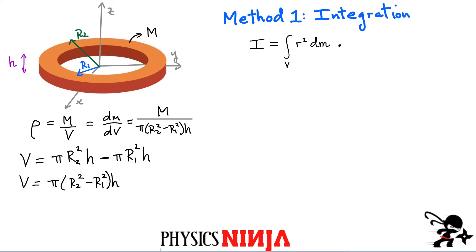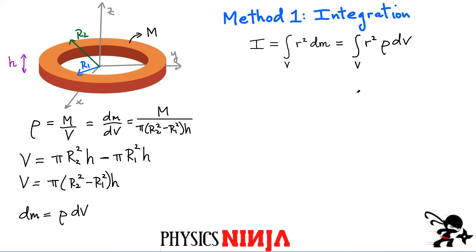Now let's go back to the integral we want to solve. We're integrating r² over the total volume, and we replace the mass element dm with density times the volume element dv. Since the density is constant it can be taken out of the integral, leaving us with the density times the integral of r² dv over the entire volume.